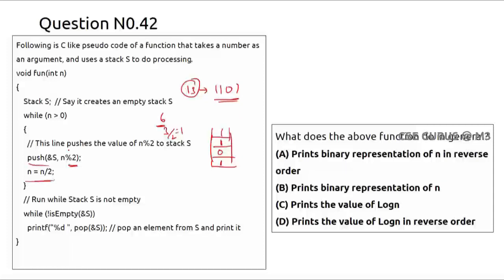After pushing all remainders, you pop them one by one and get 1, 1, 0, 1 — which is 13 in binary. This logic converts a number into its binary representation. Option B is the correct answer. The reversal provided by the stack is actually required when representing numbers in binary.